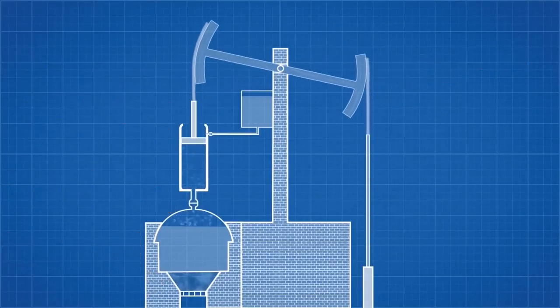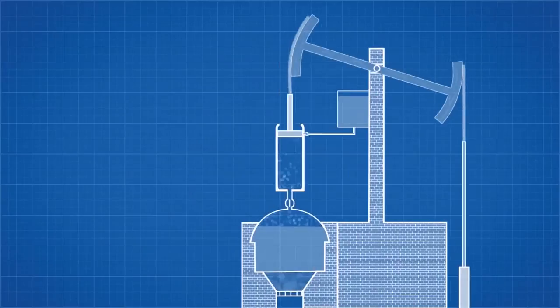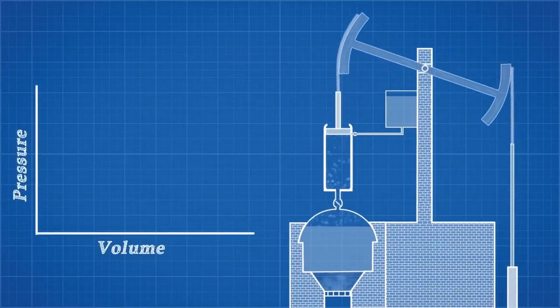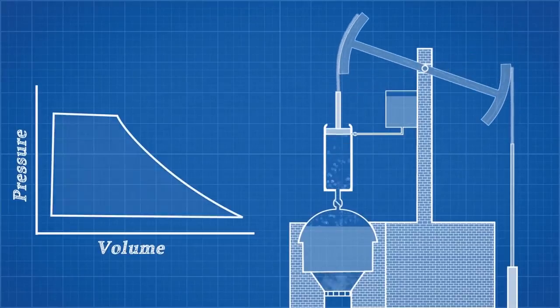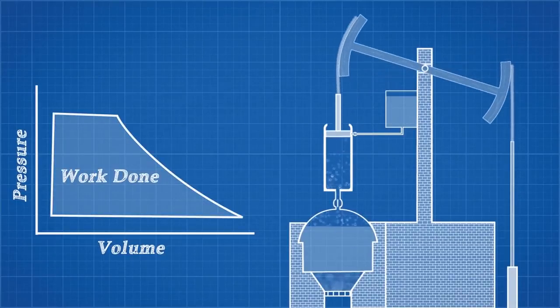We want to be able to quantify how much work is being done per cycle of this engine. To do that, we plot the pressure and volume inside the piston cylinder for one cycle, like this. The area inside is the work done, but this is the idealized PV diagram. In practice, there is a lot more energy being wasted.